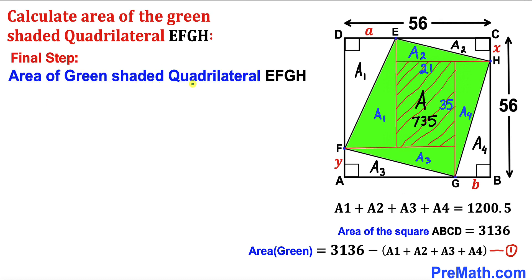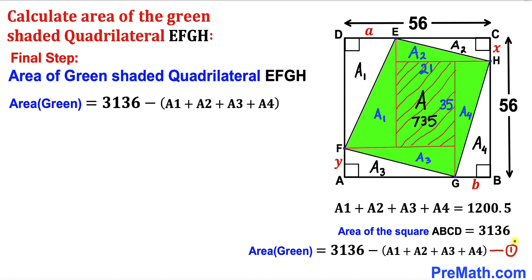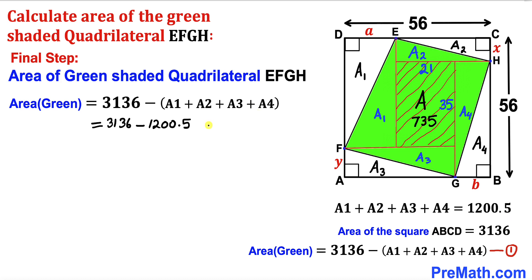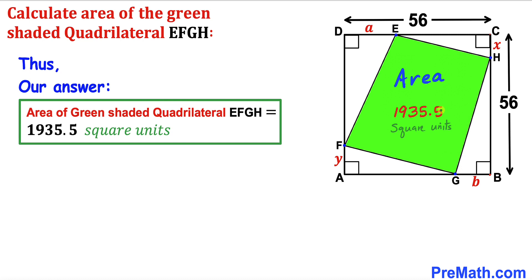Now for the final step, let's calculate the area of the green shaded quadrilateral EFGH. Recalling equation one, the area equals 3136 minus (A sub 1 + A sub 2 + A sub 3 + A sub 4). We just found that A sub 1 + A sub 2 + A sub 3 + A sub 4 equals 1200.5. Substituting, we get 3136 minus 1200.5, which gives us 1935.5 square units. So the area of the green shaded quadrilateral EFGH is 1935.5 square units. Thanks for watching and please don't forget to subscribe to my channel for more exciting videos.